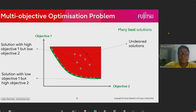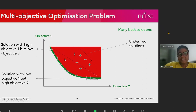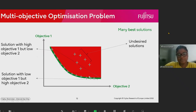Multi-objective problems present their own peculiar challenges in the sense that there is not one optimal solution — there are many best solutions. We have a Pareto front where we call the solutions non-dominated solutions, while dominated solutions are the ones we don't want. The best solutions are the best trade-offs between both objectives. Some solutions favour objective one more than two, others favour objective two more than one, and depending on the application area, different parts of the Pareto front may be desired.